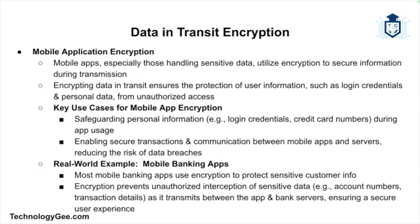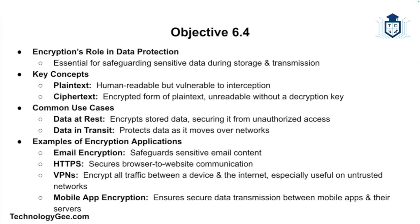Mobile application encryption is used by apps that handle sensitive data to encrypt data in transit, ensuring information like login credentials or personal data is protected. Use cases include protecting personal information such as login credentials and credit card numbers when using mobile apps, and ensuring secure transactions between mobile apps and servers. Most mobile banking apps use encryption to protect customer information transmitted between the app and bank servers, preventing sensitive data like account numbers or transaction details from being intercepted.